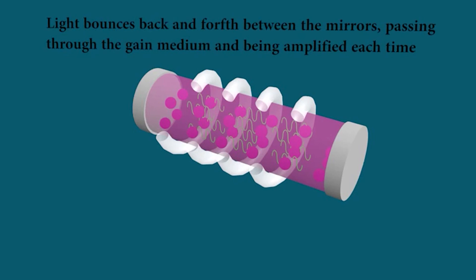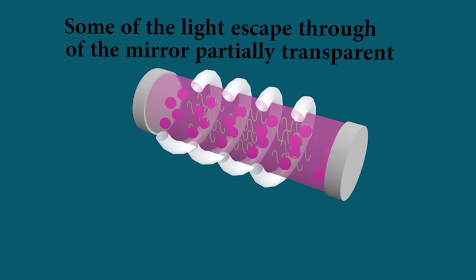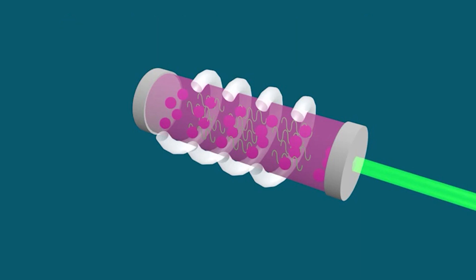Because of the end mirrors, it will hit or bounce front and back between these two end mirrors and it will get energy. Part of the rays will be reflecting or escaping out of the partially reflecting mirror. So this is the principle of laser.